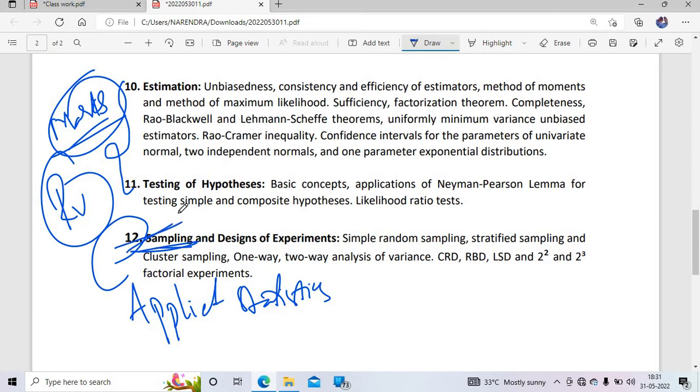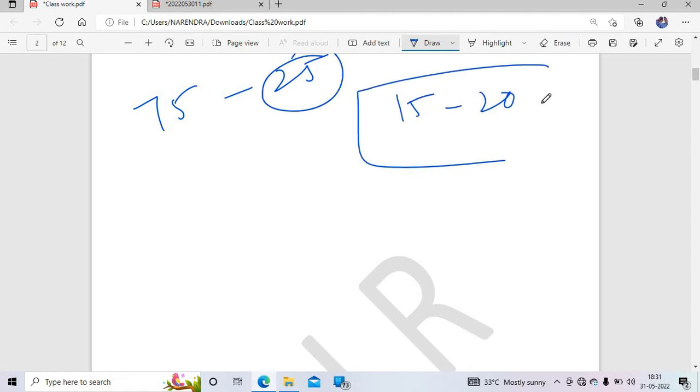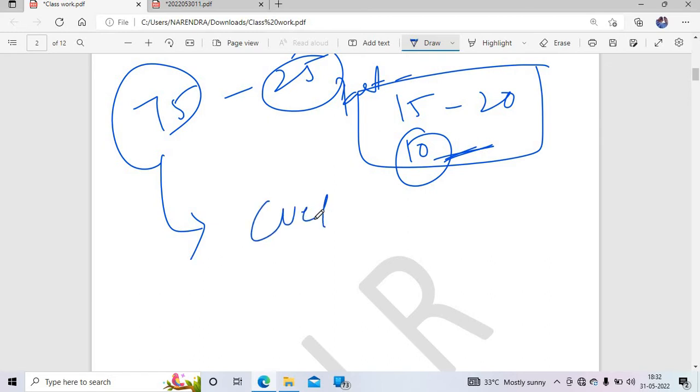When we look at the syllabus, applied statistics topics are adequate. Out of 75 questions, 25 are mathematics. My strategy is to attempt 15 to 20 mathematics questions - that's enough. In the exam, maximum 10 questions will be very simple, which is one advantage in Part A.